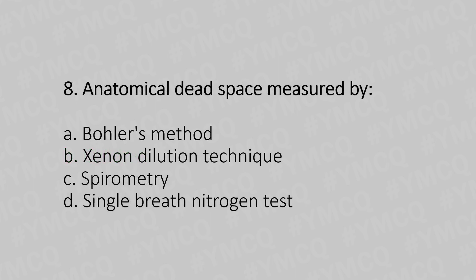Eighth question: To measure functional residual capacity, which method is used? Option A: Bohr's method. Option B: Zion dilution technique. Option C: spirometry. Option D: single breath nitrogen test. The answer is Option D, single breath nitrogen test.